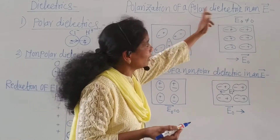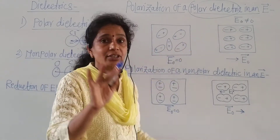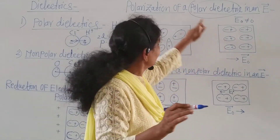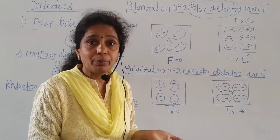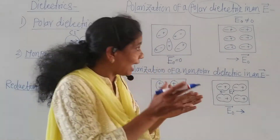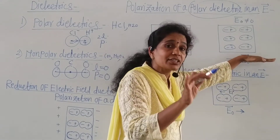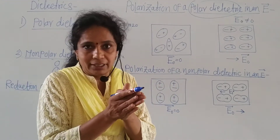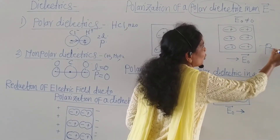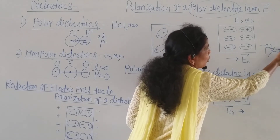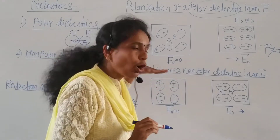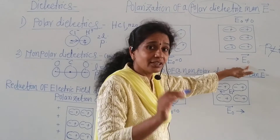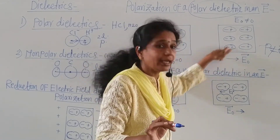In the case of a polar dielectric, in the absence of an external field the net moment is zero. But when we apply an external field to the polar dielectric, all the dipole moments are aligned in the direction of the external electric field, and therefore the dipole gets polarized. There is now a net dipole moment, so P is not equal to zero.